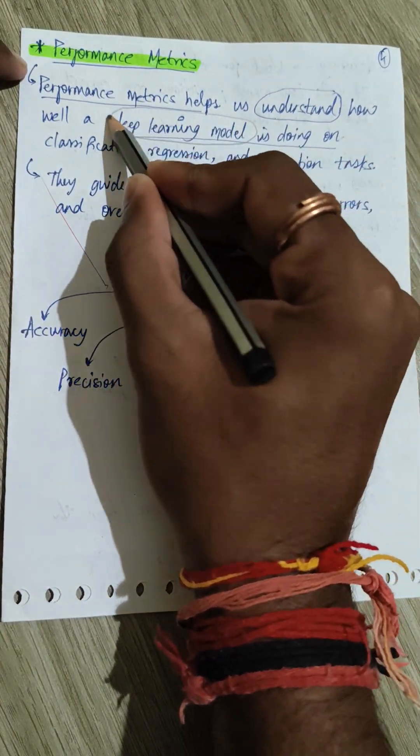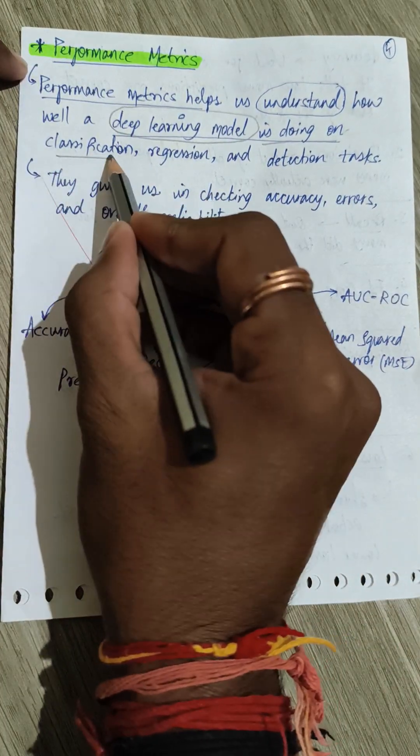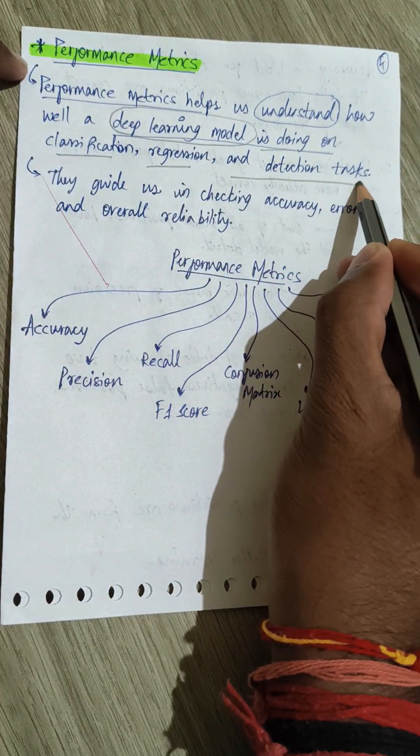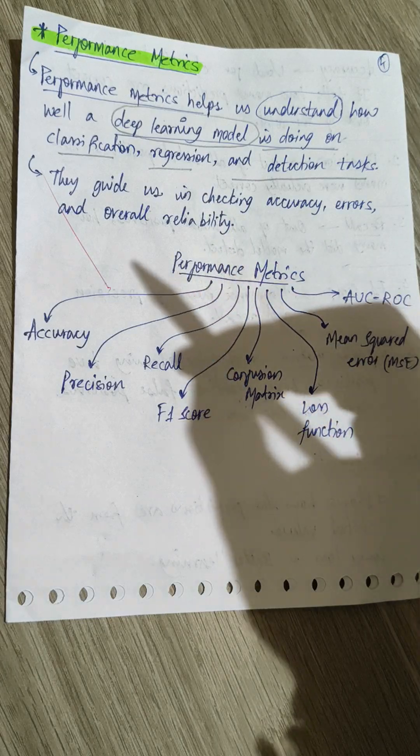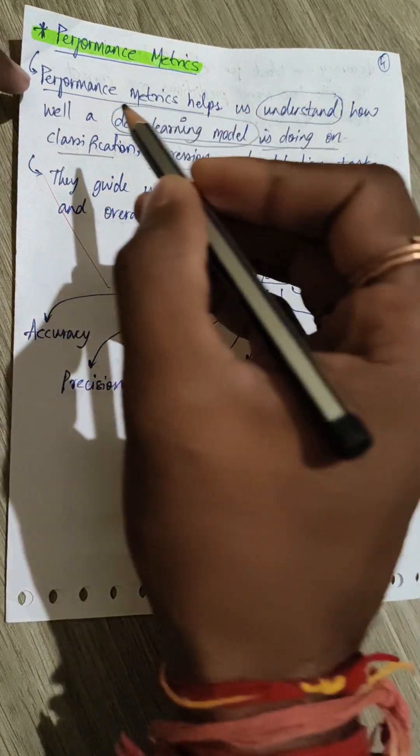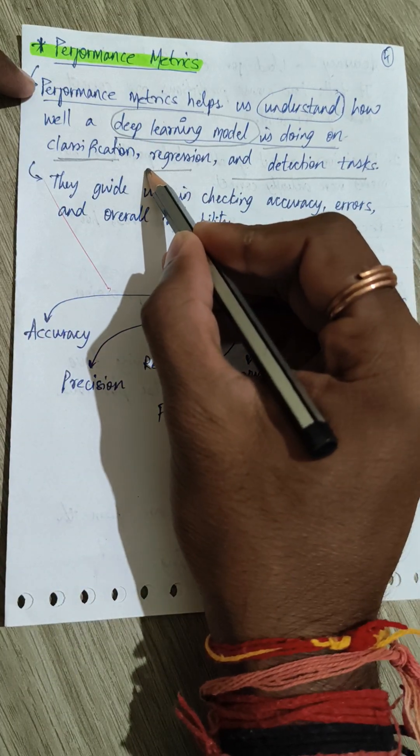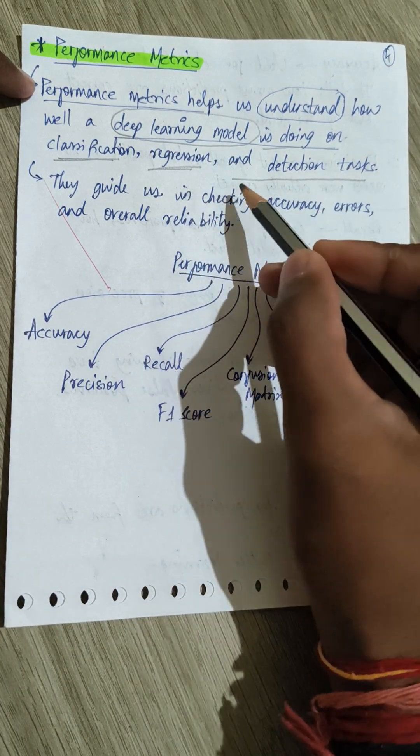A machine learning model performs on classification, regression, and detection tasks. Generally, it tells us about its performance on classification problems, regression problems, and how it is detecting the tasks.